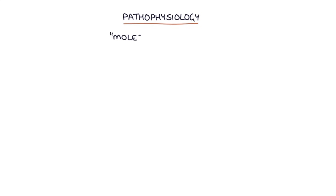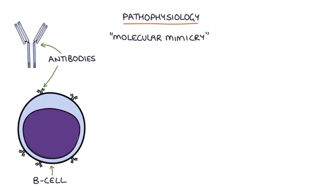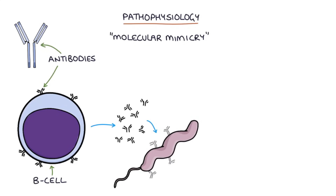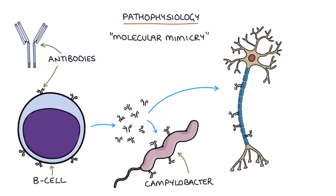So what's the pathophysiology? Guillain-Barré is thought to occur due to a process called molecular mimicry. This is where the B cells of the immune system create antibodies against the antigens on the pathogen causing the preceding infection. So if they've had a Campylobacter gastroenteritis, the B cells create antibodies against that Campylobacter. These antibodies also match proteins on the nerve cells.